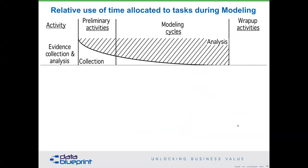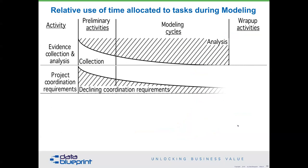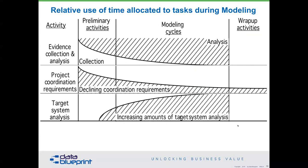We may discover that there are other attributes and other links that we need to put in place. When we're doing modeling, the modeling activities should evolve over time. The first component is what I call evidence collection and analysis — you're going to be going out and acquiring information. Over time you'll start to move things around. As the modeling cycles proceed, we should be doing more analysis around that, as opposed to less analysis.